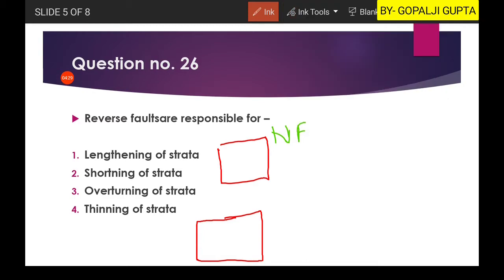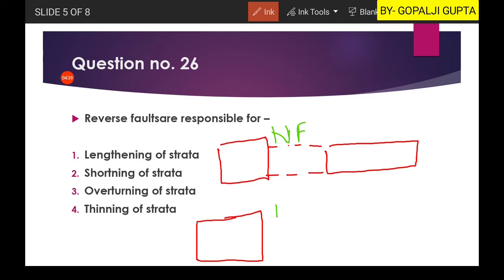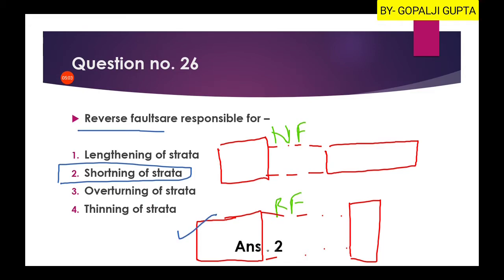Something like this. So length is increased but height is decreased in the case of normal fault. But if you look at reverse fault, the same block will have thickening of the earth's crust. The thickness will increase and the length will decrease. It will shorten the length. So now you can understand that reverse fault is responsible for shortening of strata. The second option will be our right answer.